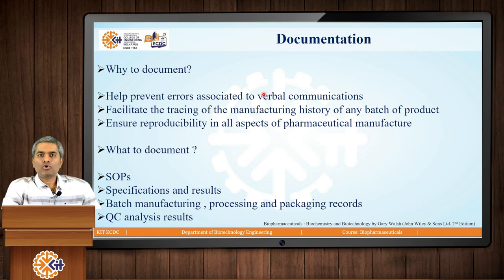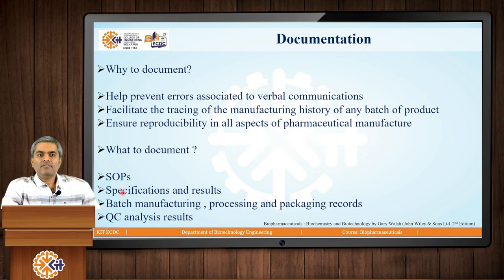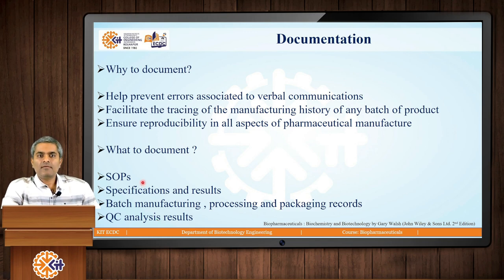The third point is documentation. The first question is why to document, and there are three principal reasons. Documentation helps prevent errors associated with verbal communications. Documentation facilitates tracing the manufacturing history of any batch of the product at any point in time. And documentation also ensures reproducibility in all aspects of pharmaceutical manufacture. The next question is what to document — there are four segments: first, all standard operating protocols or standard operating procedures (SOPs); then all specifications set by the authority and the results obtained in the manufacturing process; batch manufacturing, processing, and packaging records; and finally, quality control results. All four segments are documented and kept for audit.